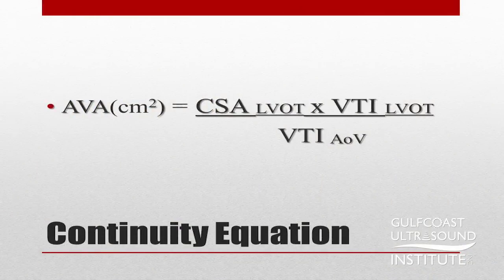First, let's go over what the continuity equation actually is. The continuity equation for the aortic valve area equals the cross-sectional area of the left ventricular outflow tract times the velocity time integral, or VTI, of the left ventricular outflow tract over the VTI of the aortic valve. We use the continuity equation to calculate the aortic valve area. A lot of people get confused because there are many different ways this formula can be shown, all meaning pretty much the same thing.